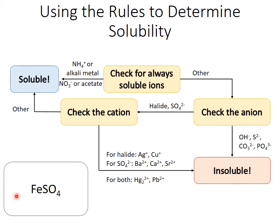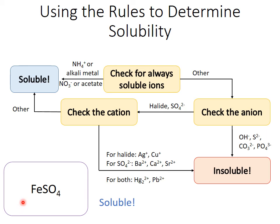How about iron sulfate? I don't see any of our always soluble ions, so we go to check the anion. It's a sulfate, so now we have to check the cation against our list of exceptions. Iron's not on there, so this is a soluble compound.